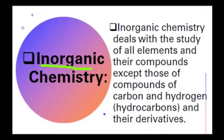Then, inorganic chemistry — inorganic chemistry is totally the opposite of organic chemistry. In organic chemistry, we study compounds containing carbon and hydrogen or their derivatives. But in inorganic chemistry, we study all elements and their compounds except compounds of carbon and hydrogen and hydrocarbons.